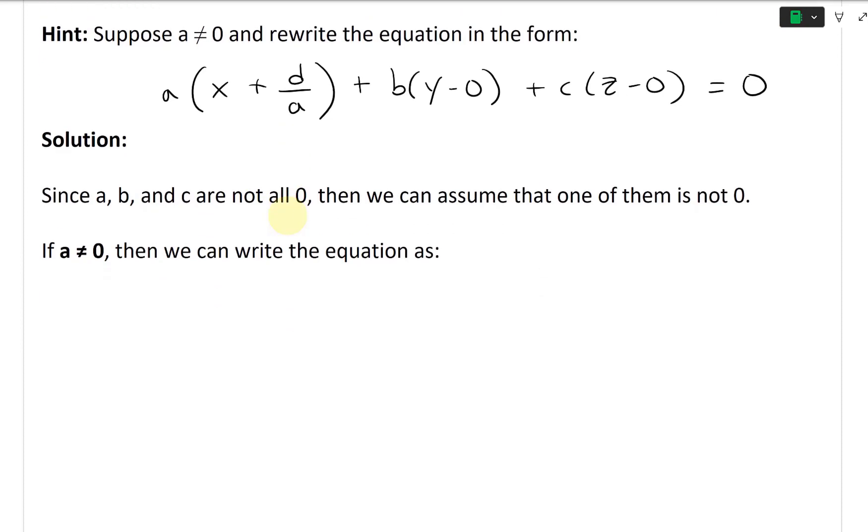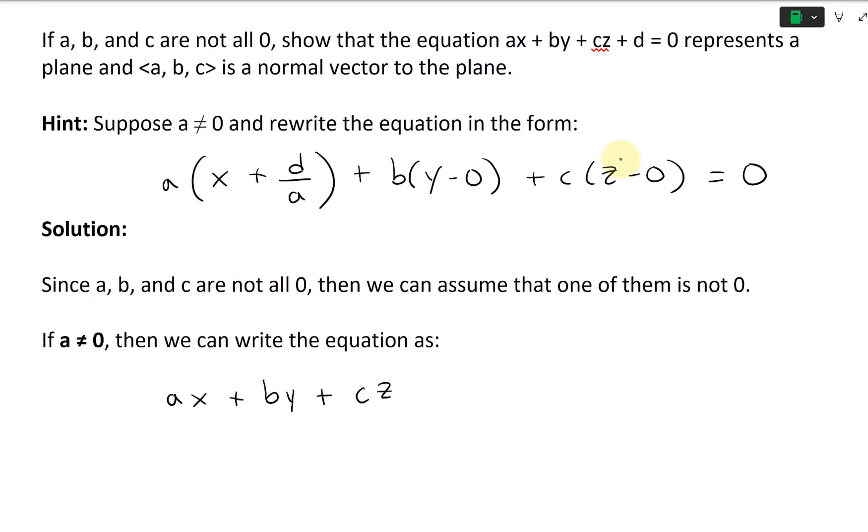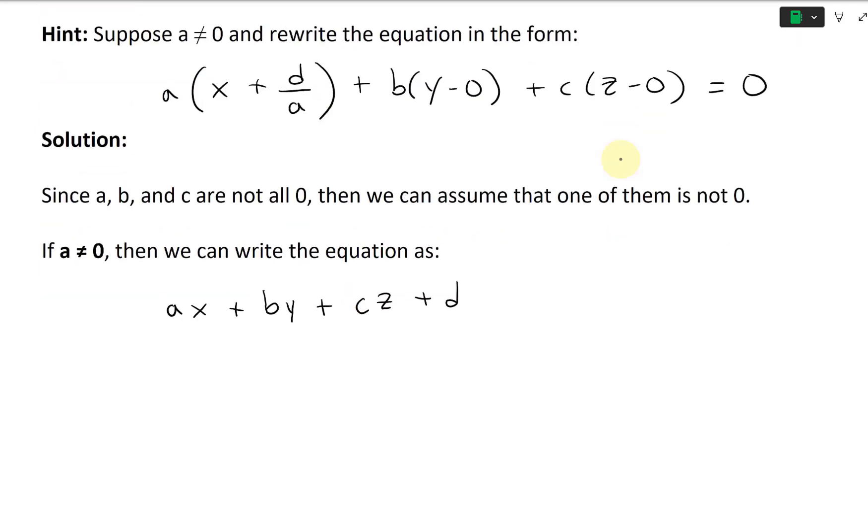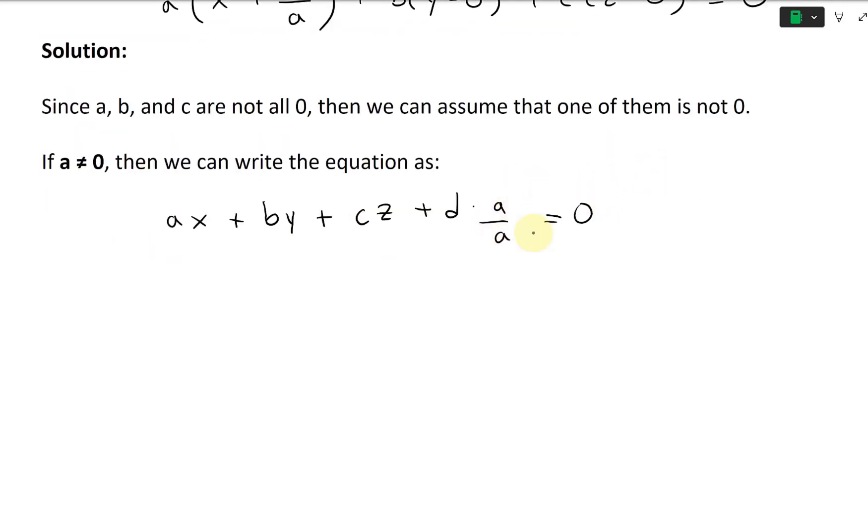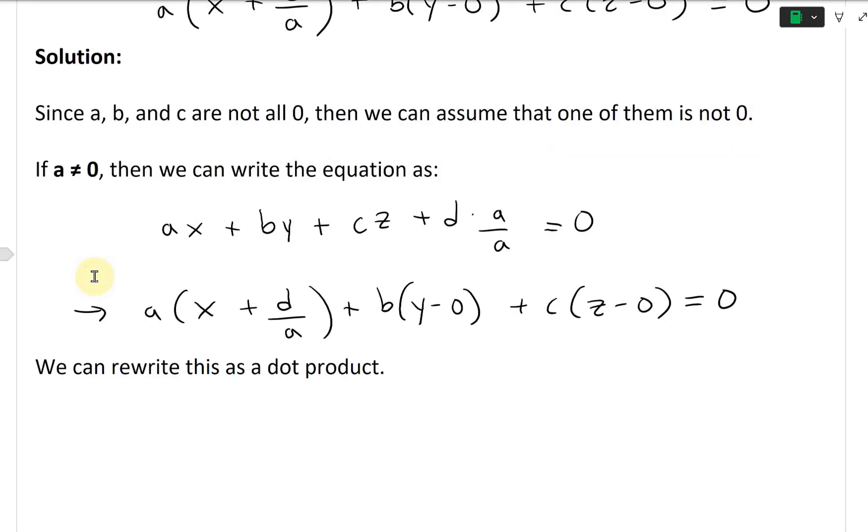Assume a is not equal to zero. We have ax + by + cz + d equals zero. I'm going to multiply top and bottom by a, which doesn't change anything. Then factor out the a to get a(x + d/a) + b(y - 0) + c(z - 0) = 0.